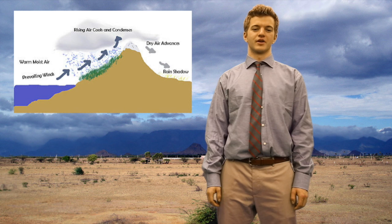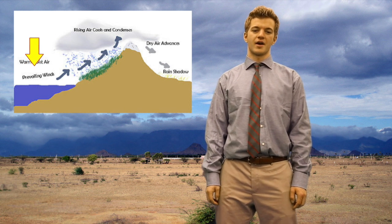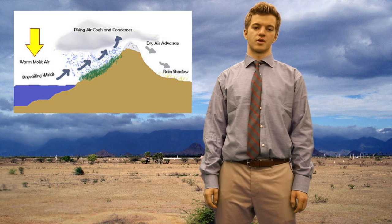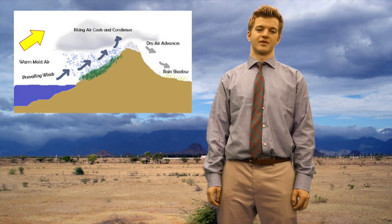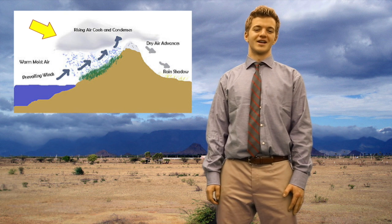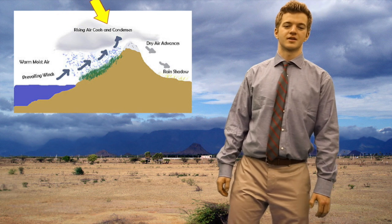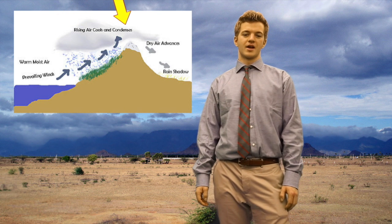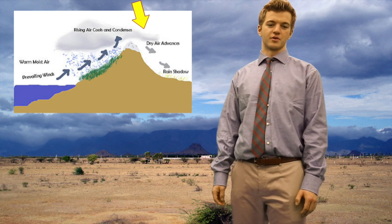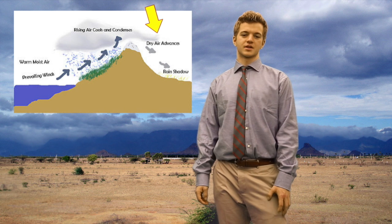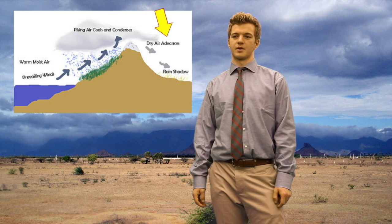Deserts can also form in rain shadows. As winds blow at low elevation over the ocean towards the shore, the air absorbs moisture and becomes quite humid. Upon reaching a coastal mountain range, this humid air must rise. As the air rises, it expands and cools. The water it contains condenses and falls as rain on the seaward flank of the mountains, nourishing a coastal rainforest. As a consequence, a rain shadow forms and the land beneath the rain shadow becomes a desert.